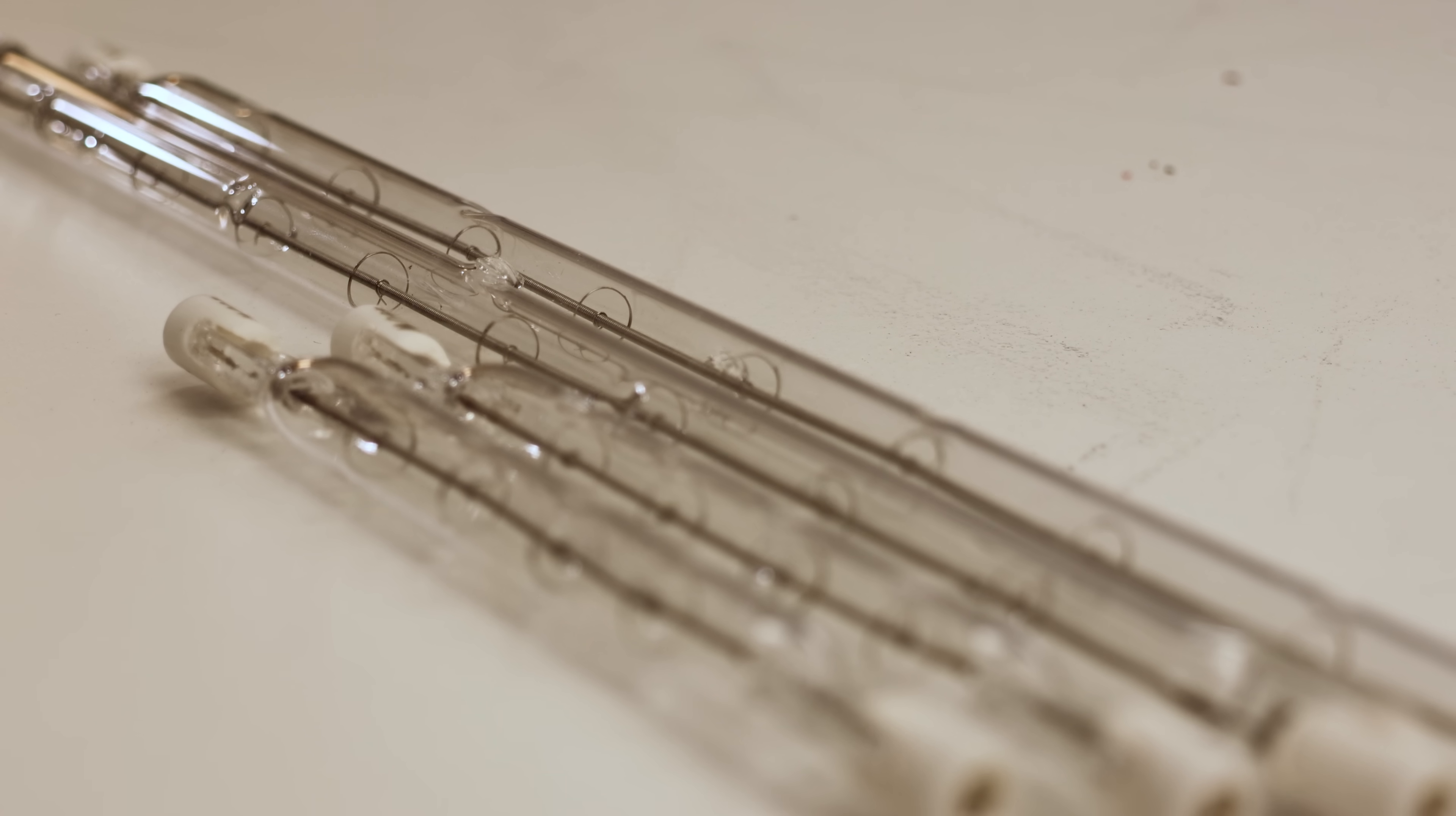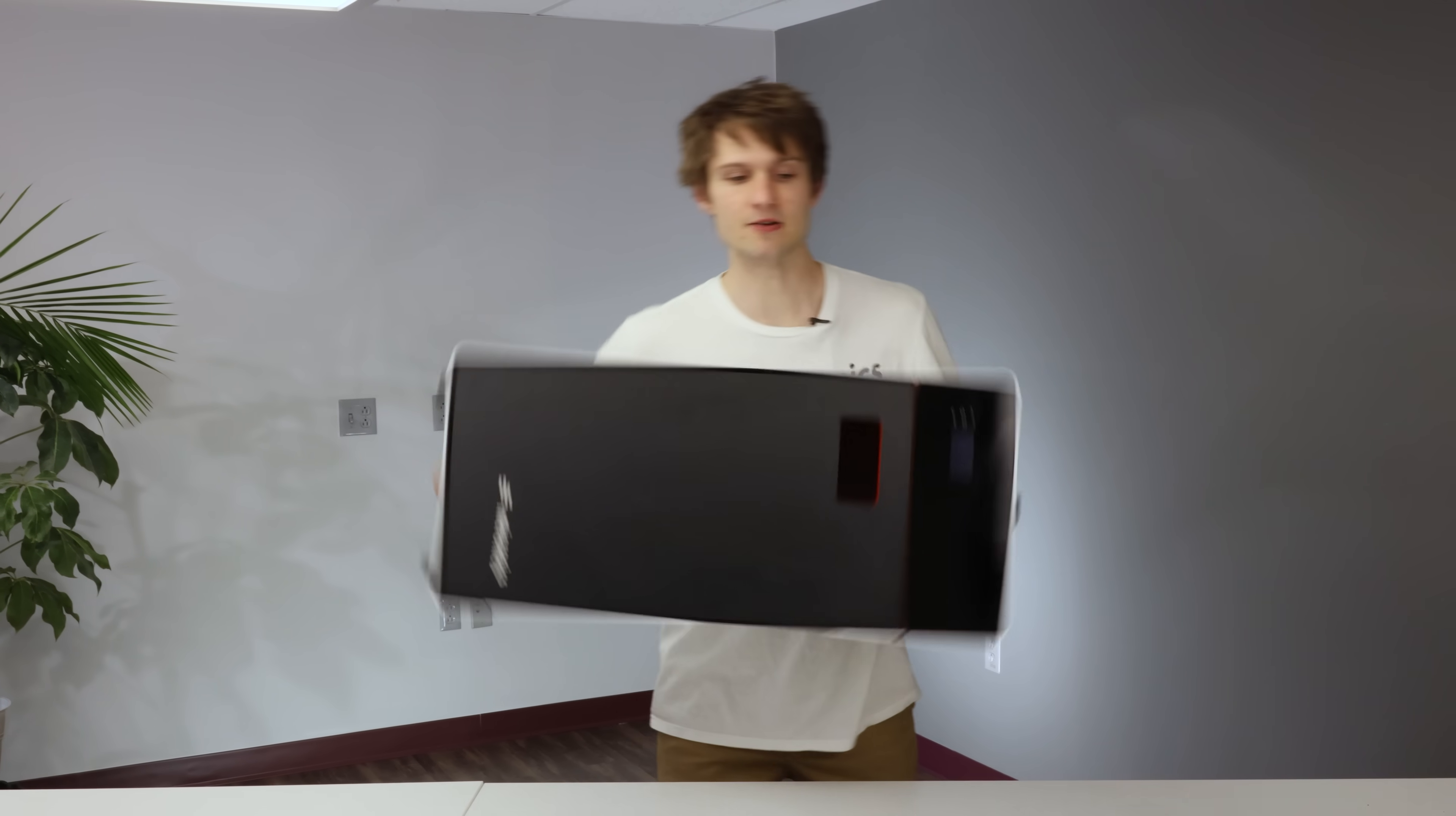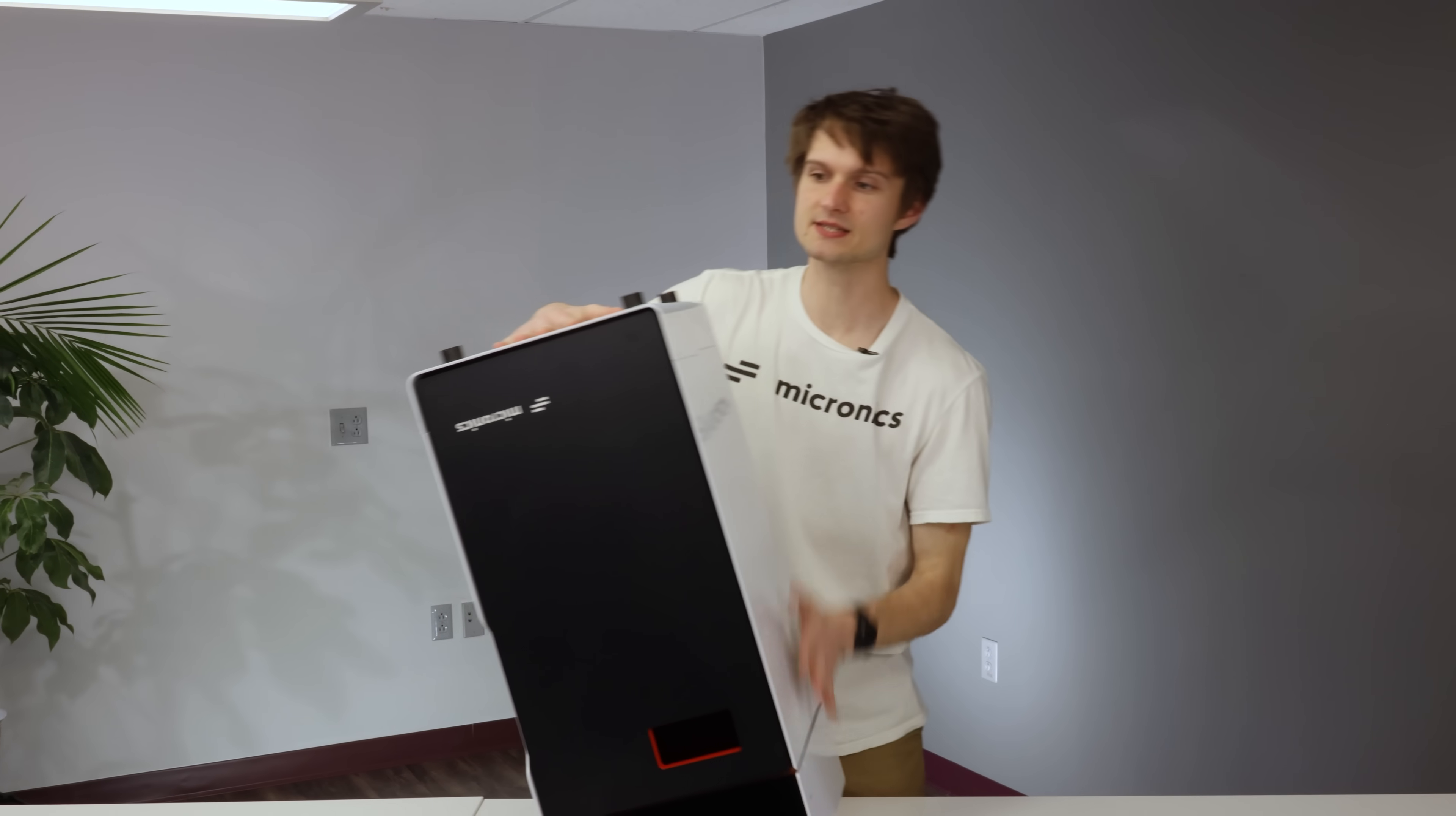Moving on, it's time to install the four halogen heating lamps, which are the key to maintaining the correct surface temperature. Flip the printer upside down to access the lamp sockets. Each lamp has its specific socket, so make sure you're matching them correctly.